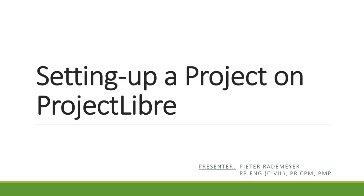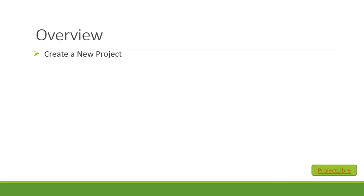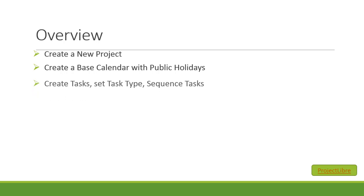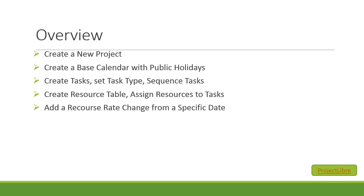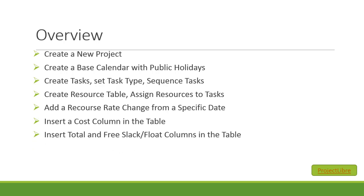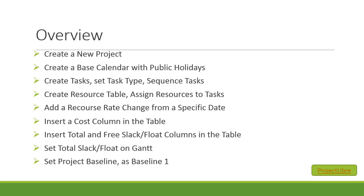In this screencast, we will be looking at setting up a project on Project Libre. First, we will create a new project and give it a name, create a base calendar, create tasks, set the task type and sequence the tasks, create a resource table and assign resources to tasks, add a resource rate change, insert cost and float columns, set total slack on the Gantt, save the project as a baseline, and look at ways of printing the Gantt.